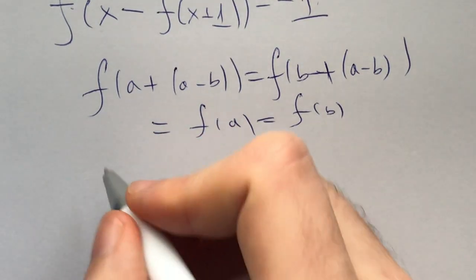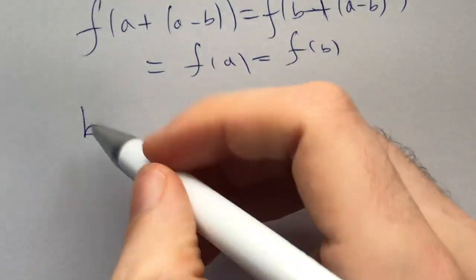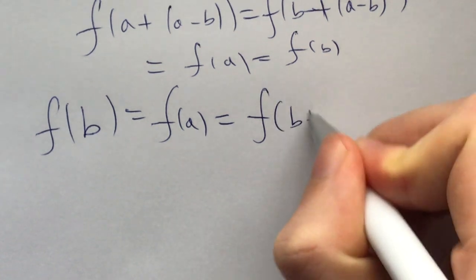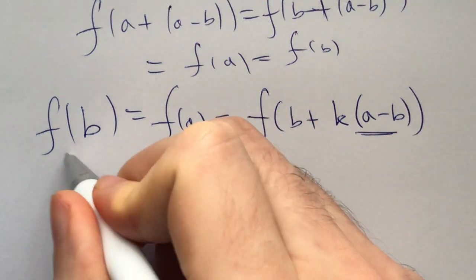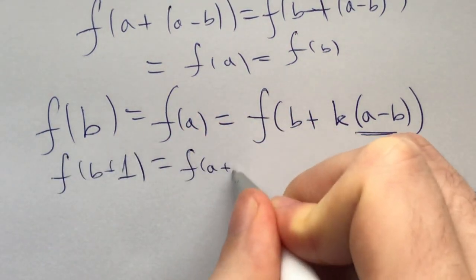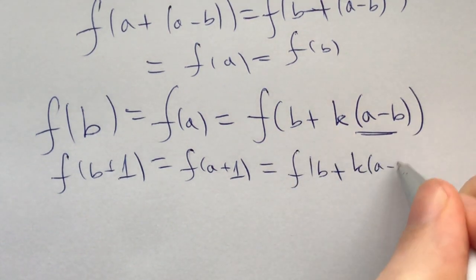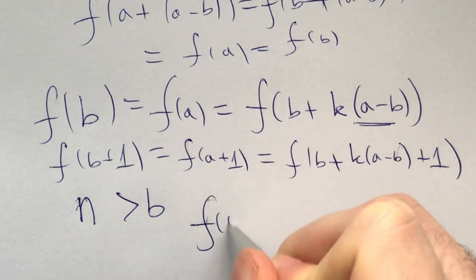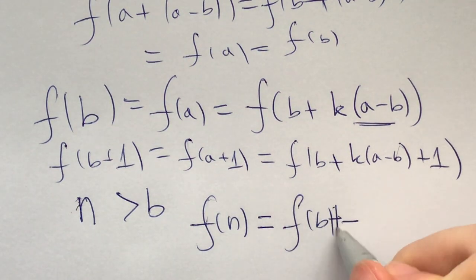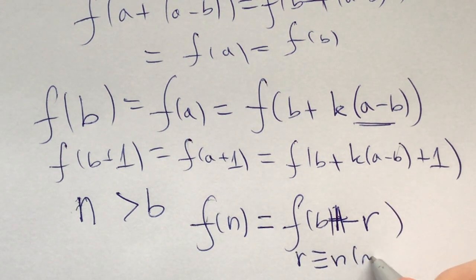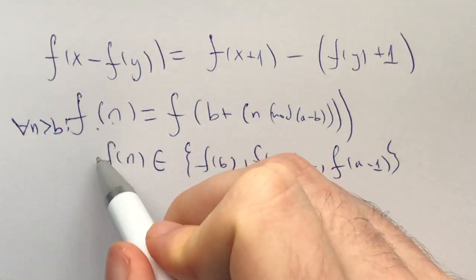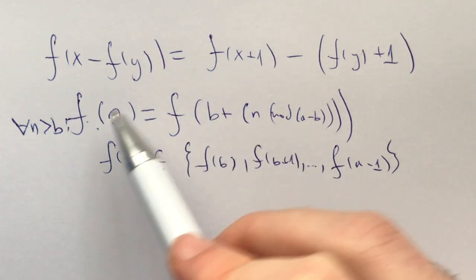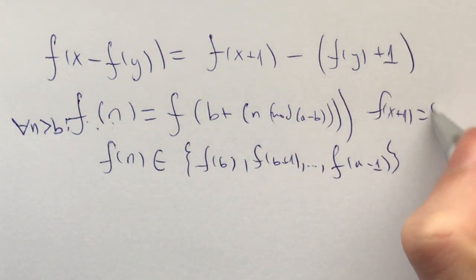If the function is not injective and f of b equals f of a, then f of b is the same as f of b plus k times a minus b. Also f of b plus 1 equals f of a plus 1 equals f of b plus k times (a minus b) plus 1. So for every n greater than b, f of n equals f of b plus r, where r is what n is congruent to modulo a minus b. This followed just from applying f of x plus 1 equals f of f of x.